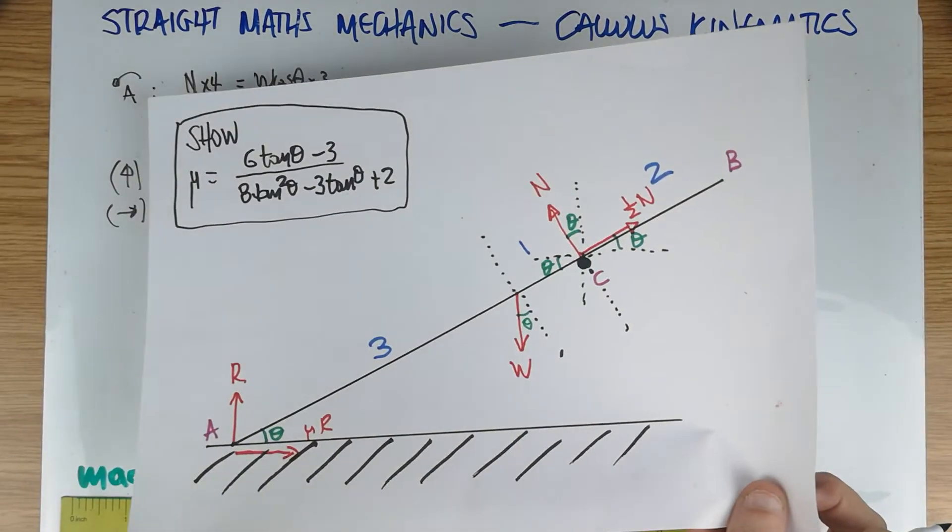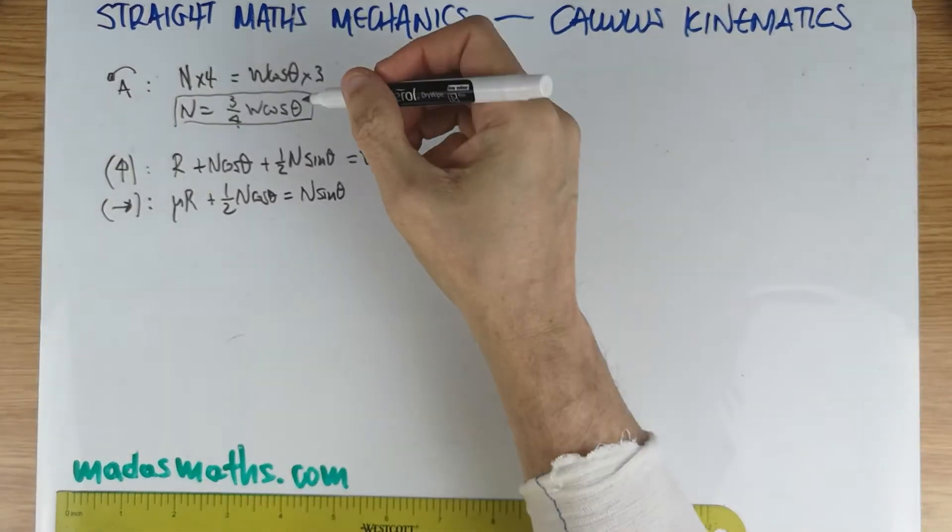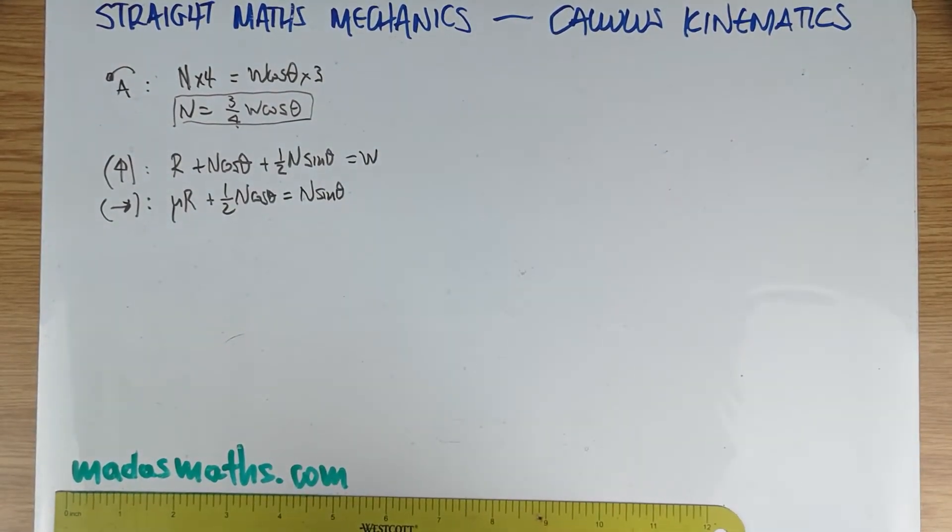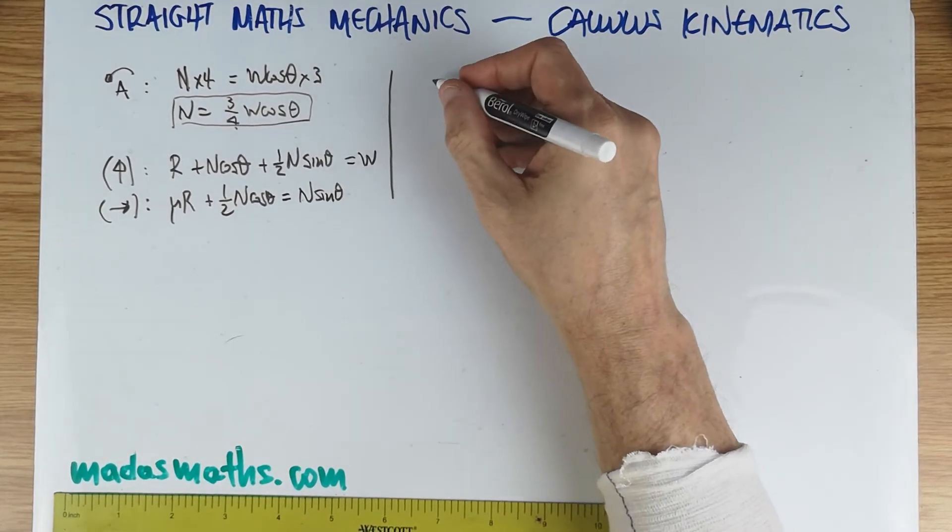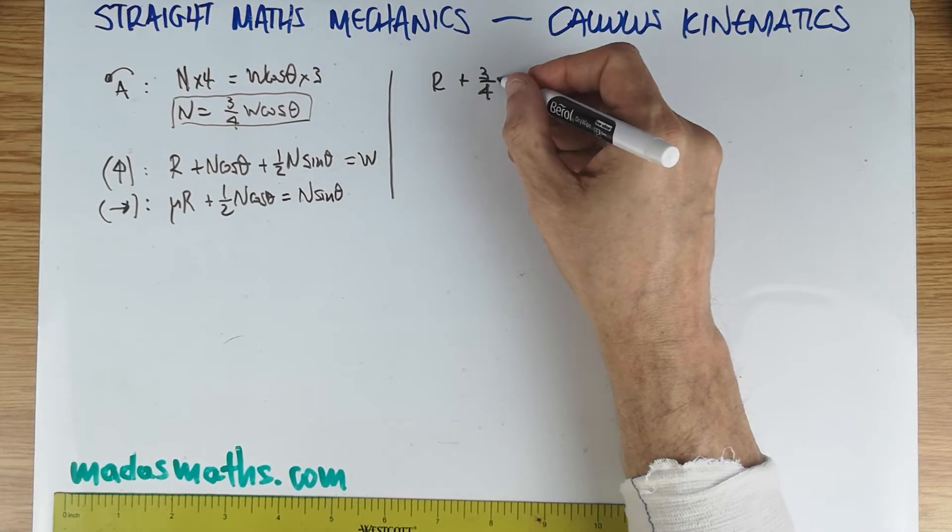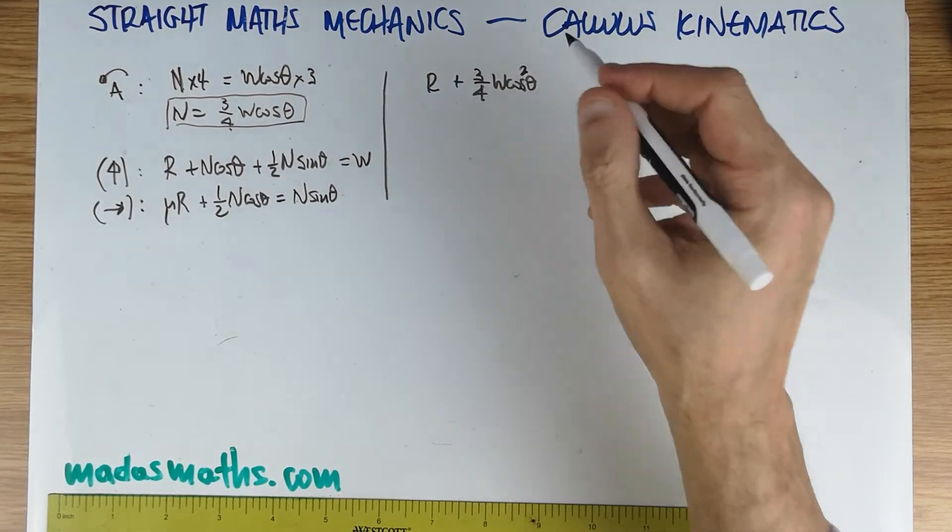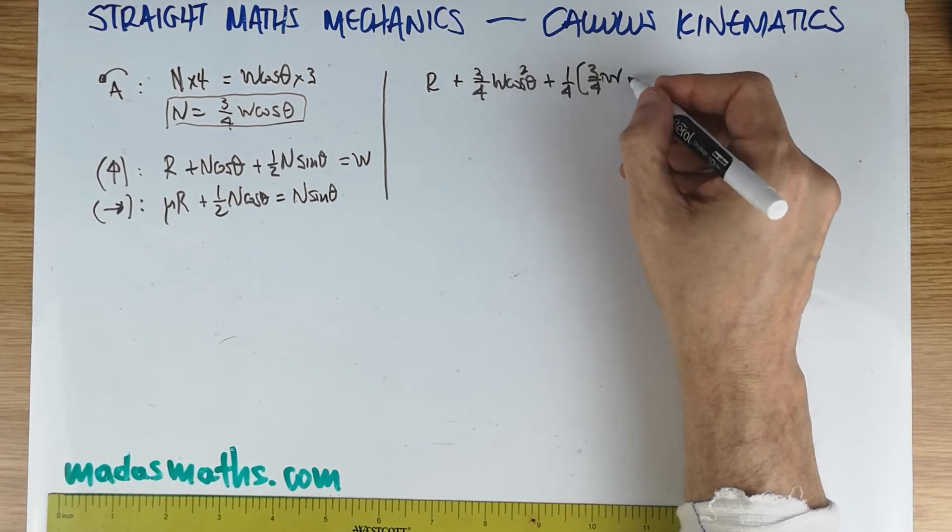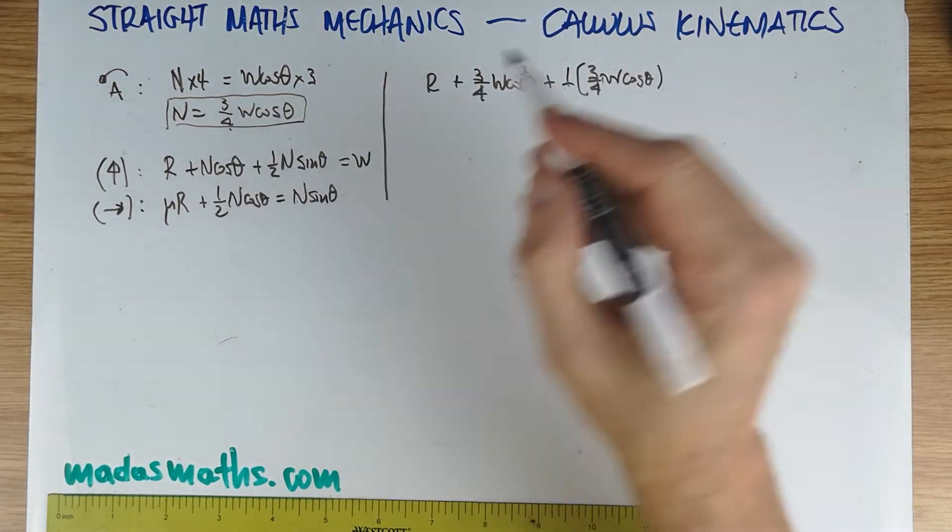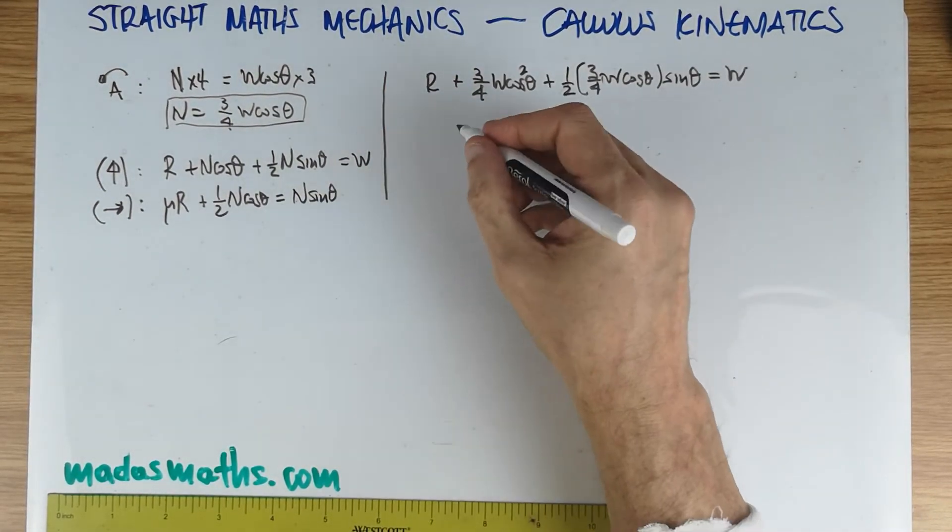I've got three equations. I'm trying to think what is the best way of dealing with this. I think the sensible way is to move the N, which I have in the box, into both of these equations. See what happens. So, R plus three-quarters W cos θ, that's this N here, times another cos θ, so it's going to make that squared, plus a half times three-quarters W cos θ, times the sin θ there, gives us W.